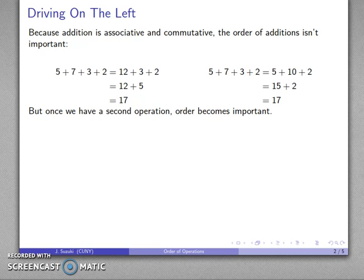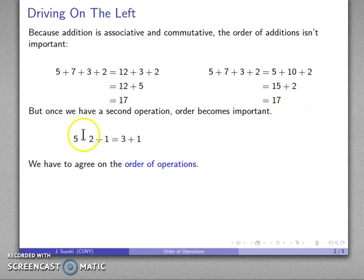But as soon as I have a second operation, the order in which I perform these operations can become important. So we have to agree on an order of operations. For example, 5 minus 2 plus 1. If I do 5 minus 2 first, I get 3, add 1, and then I get an answer of 4.